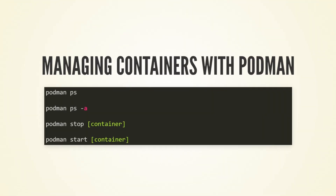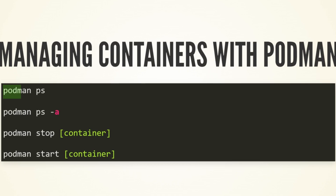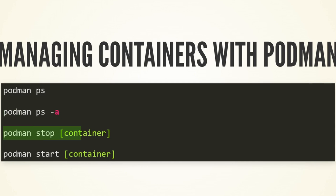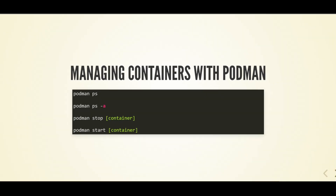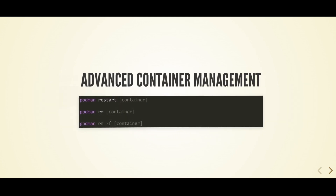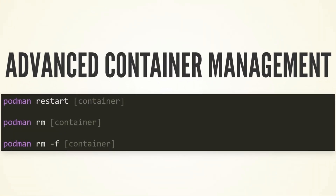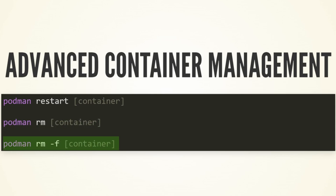Here are some commands for managing containers with Podman. 'podman ps' lists all running containers. 'podman ps -a' lists all containers, including exited ones. 'podman stop container' stops a running container. 'podman start container' starts a stopped container. For advanced management: 'podman restart container' restarts a container. 'podman rm container' removes a stopped container. 'podman rm -f container' forcefully removes a container.